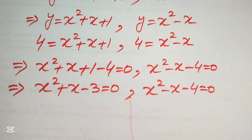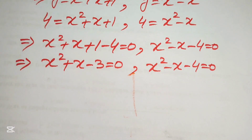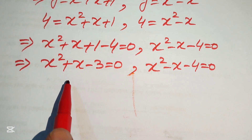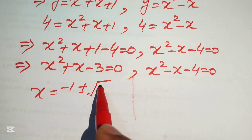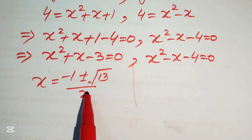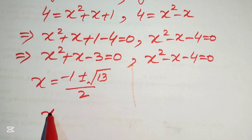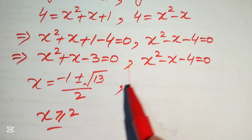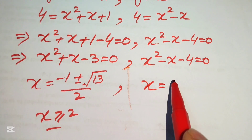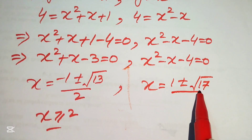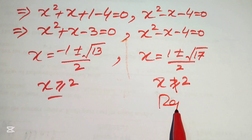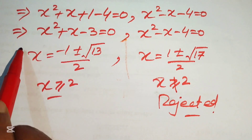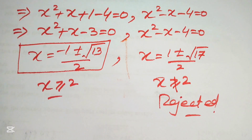Both equations are quadratic, so we apply the quadratic formula to each. For x squared plus x minus 3 equals 0, we get x equals negative 1 plus or minus square root of 13, divided by 2. For x squared minus x minus 4 equals 0, we get x equals 1 plus or minus square root of 17, divided by 2. Checking the condition x greater than or equal to 2, the second set of roots does not satisfy this, so we reject them. The final answer is x equals negative 1 plus or minus square root of 13, divided by 2. Thank you for watching — please subscribe for more videos.